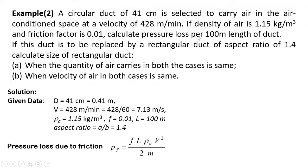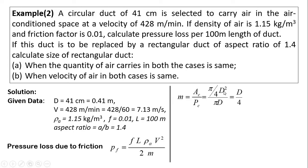For pressure loss due to friction, all values in the formula are known except hydraulic mean depth M. For a circular duct, M = cross-sectional area divided by wetted perimeter = (π/4·d²)/(π·d), which simplifies to M = d/4. With d = 0.41 m, hydraulic mean depth M = 0.41/4 = 0.1025 m.